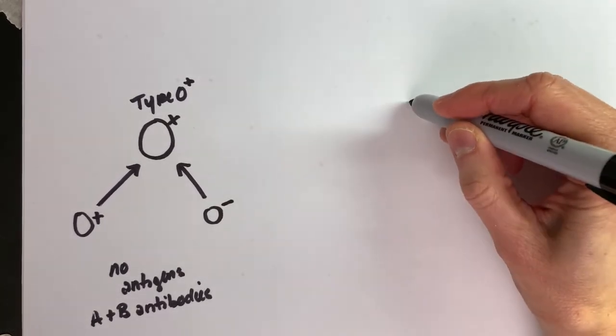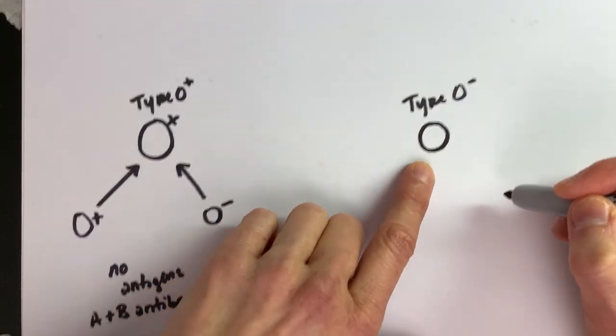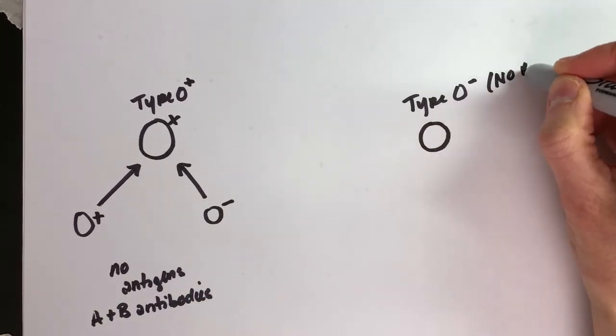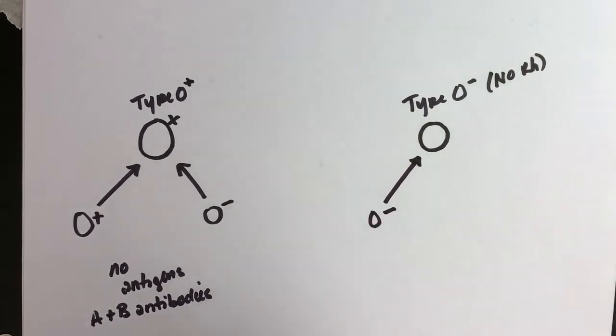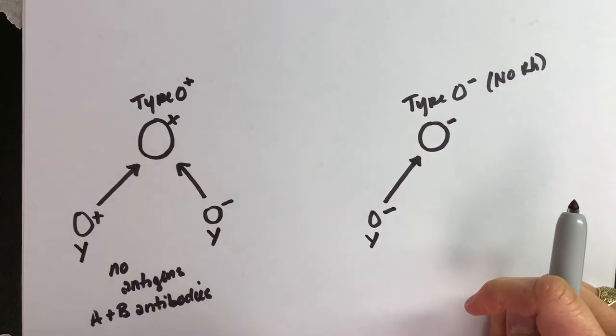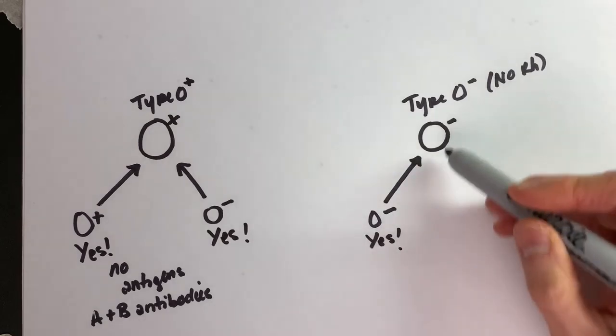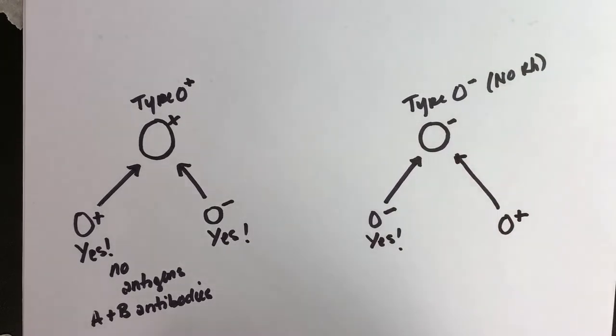O negative, let's try O negative. Now this person doesn't have any A's or B antigens and they don't have Rh, no Rh. They have no Rh. Could I give them O negative? So this person is O negative. Could I give them O negative? Yes, because that matches. I could give them the one that matches. Let's try the O positive. Could I give them O positive?